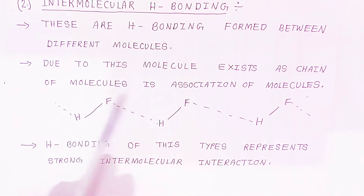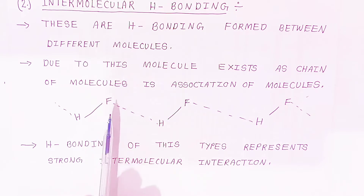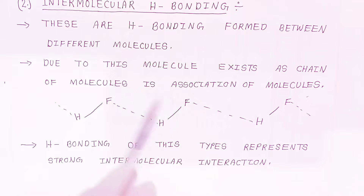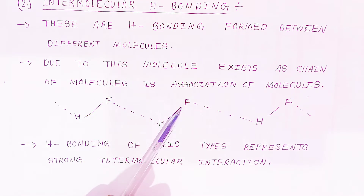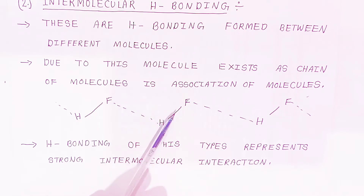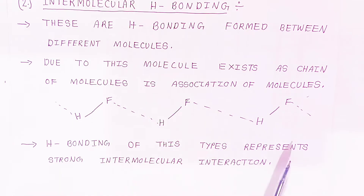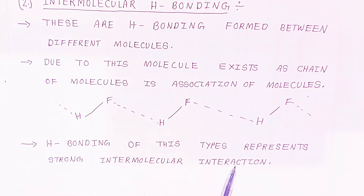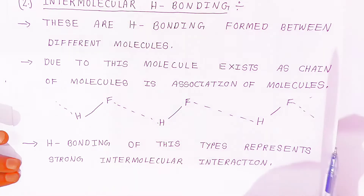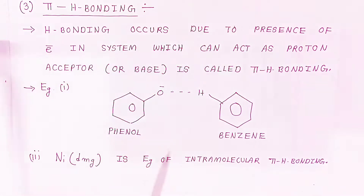This dotted part is called hydrogen bonding. Because it involves different molecules, it is called intermolecular hydrogen bonding. In intermolecular bonding the molecules are different, whereas in intramolecular bonding it occurs within the same molecule. Hydrogen bonding of this type represents strong intermolecular interaction — it is a stronger intermolecular interaction.